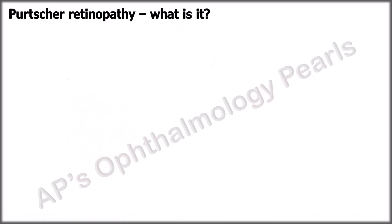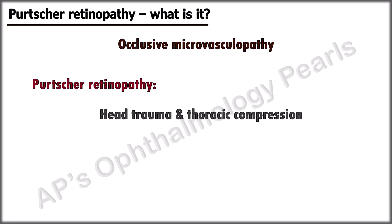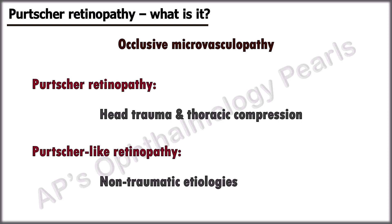Purtscher retinopathy is an occlusive microvasculopathy originally described occurring after trauma. Today the term is used when the condition occurs following head trauma and compressive thoracic trauma. When it occurs in other conditions, it is termed Purtscher-like retinopathy.